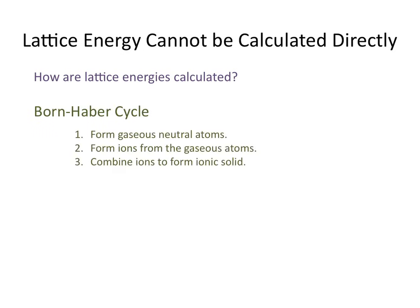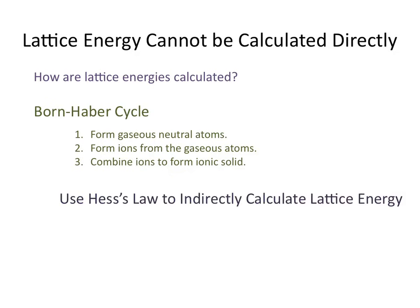Lattice energy cannot be calculated directly. So how are lattice energies calculated? They calculate lattice energies by first forming gaseous neutral atoms, then forming ions from the gaseous atoms, and then combining the ions to form an ionic solid. You can then use Hess's law to indirectly calculate the lattice energy by combining the enthalpy changes from these three separate steps.